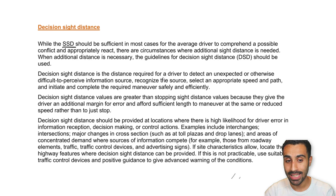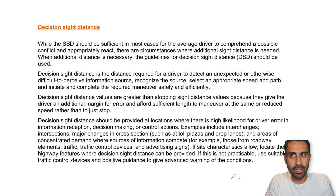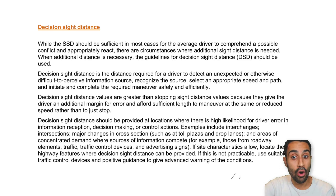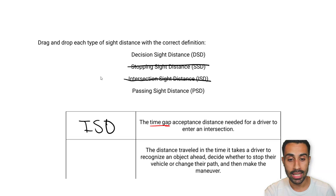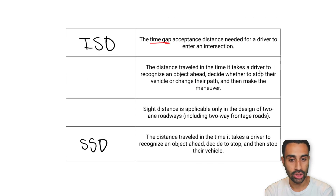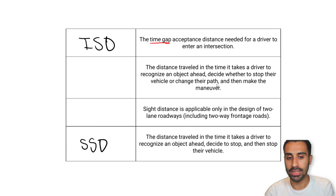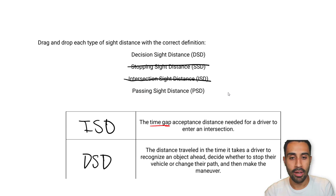The decision sight distance will always be greater than the stopping sight distance because it adds an additional component. With stopping sight distance, it's perception-reaction then stop. With DSD, we have perception-reaction, stopping, plus time for the driver to maneuver. So we add that on top. In the question, DSD is the distance traveled in the time it takes the driver to recognize an object, decide whether to stop or change their path, then make that maneuver.